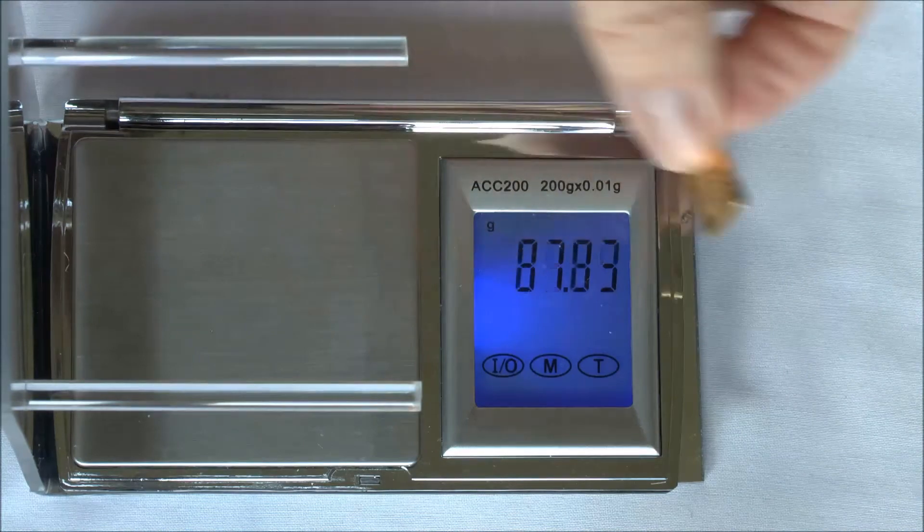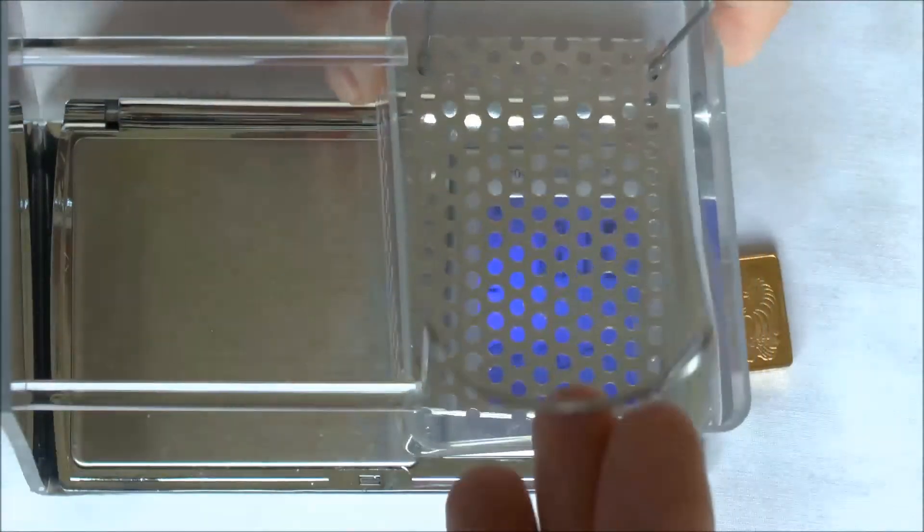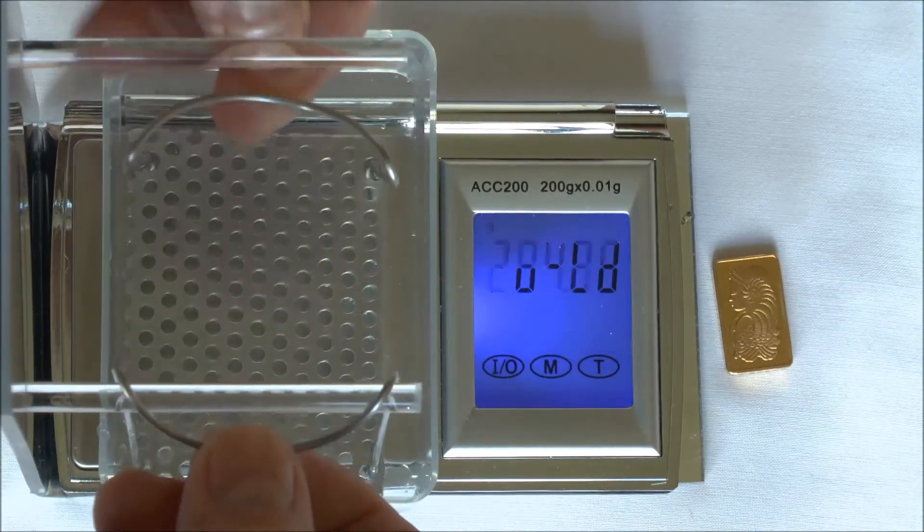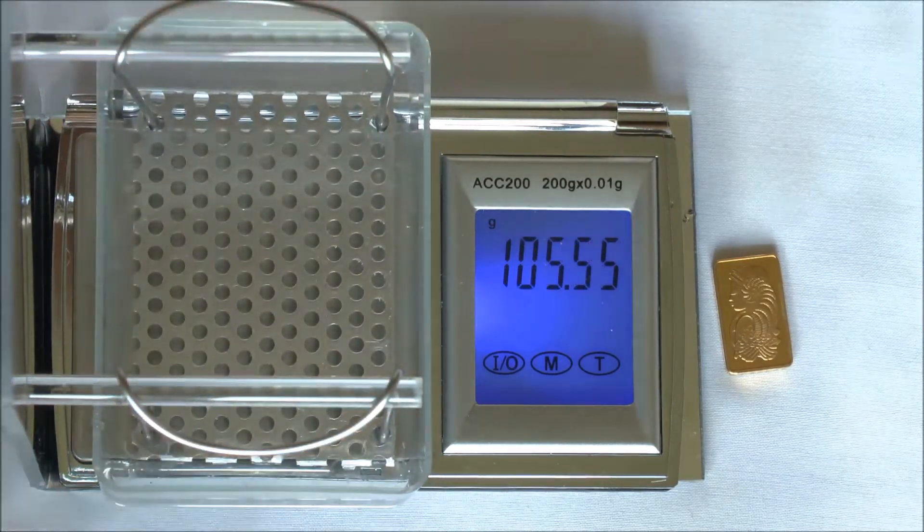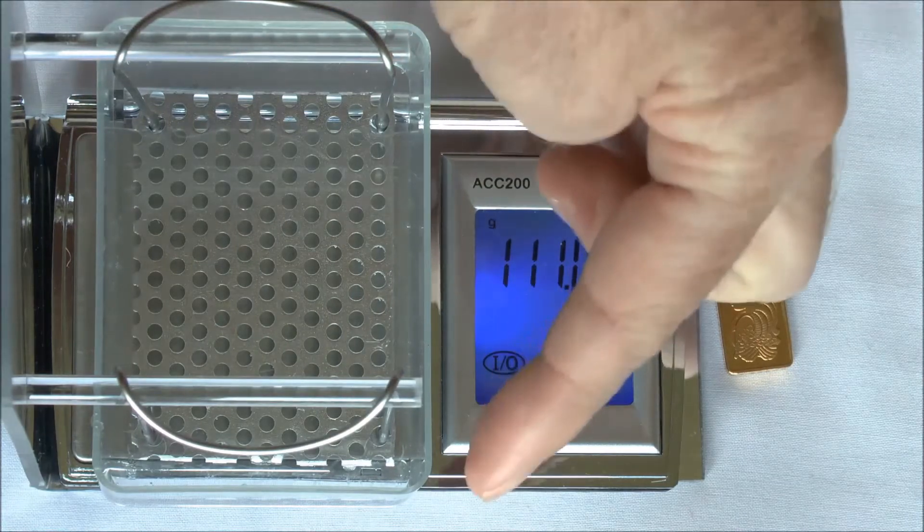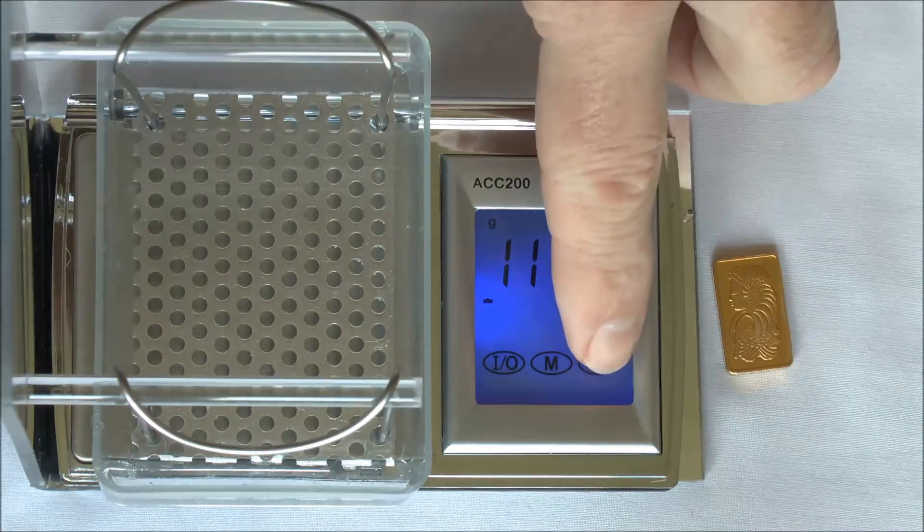Now we're going to get the wet weight. So I've put some distilled water in the supplied container. I'm going to pop that on the scale. I'm going to hang the basket from the stand, and we're going to make sure that the basket doesn't touch the water, doesn't touch your container in any way, and zero the scale.